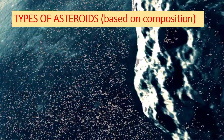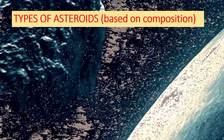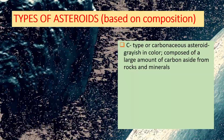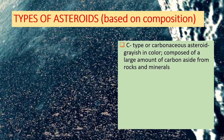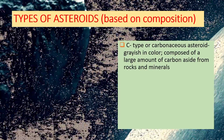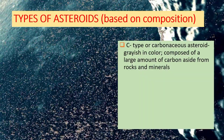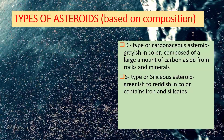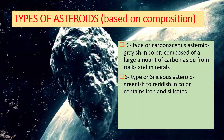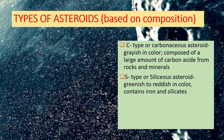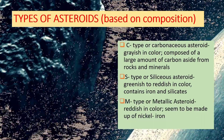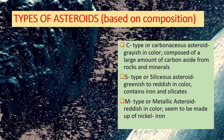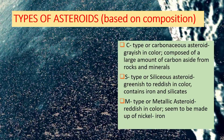We also have different types of asteroids and these are based on their composition. The first is the C-type or the carbonaceous asteroid. They are grayish in color and they are composed of large amounts of carbon, aside from rocks and minerals. We also have the S-type or the siliceous asteroid, which are greenish to reddish in color and they contain iron and silicates. And we have M-type or the metallic asteroid, which is reddish in color and they seem to be made up of nickel and iron.